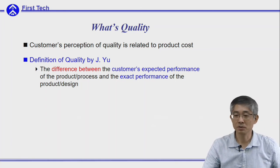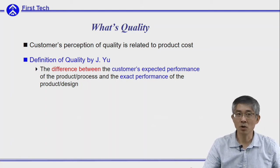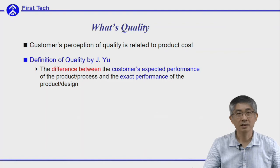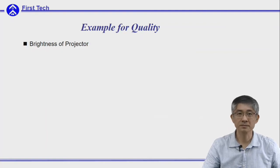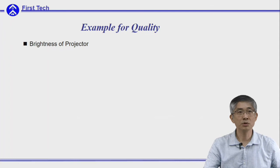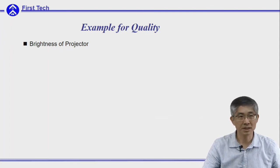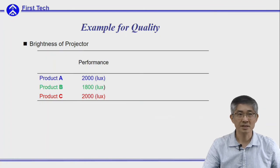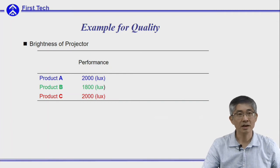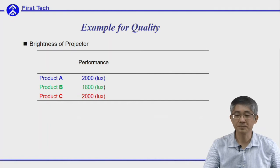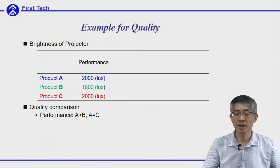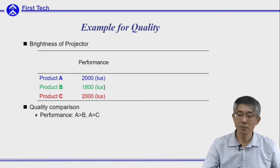Let me give you an example to illustrate how cost will affect the customer's perception of quality. Assume you want to buy an LCD projector — the brightness will be the key performance. Say you have three choices: A, B, and C. This is the performance, which is the brightness of the projectors. You can see A and C are better than product B. So looking only at performance, you would probably pick either A or C.